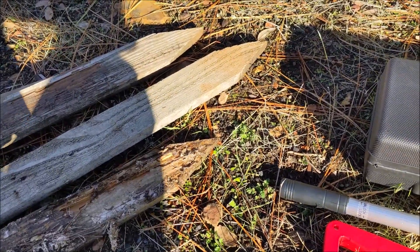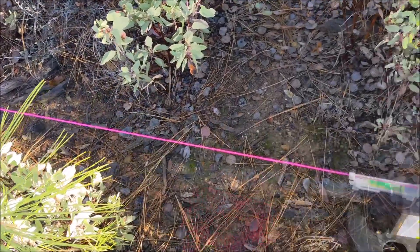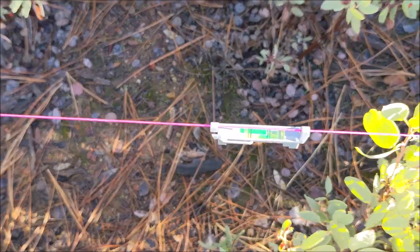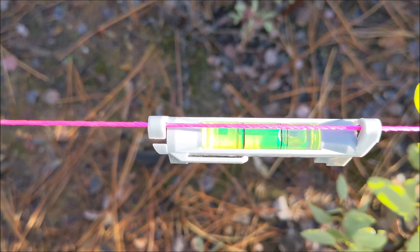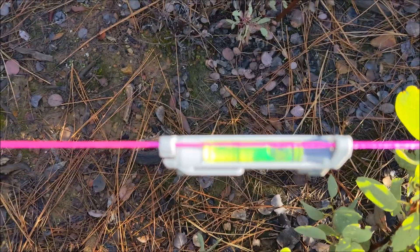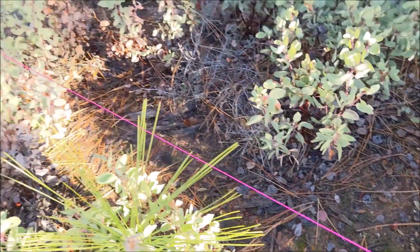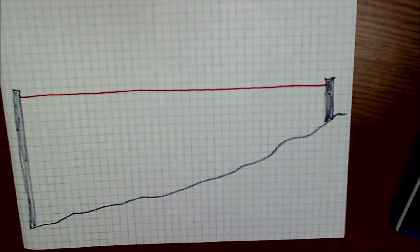Then you're going to drive the stakes in the ground on each end of the slope you're trying to find. Remember, it's going to be average slope. Put the line level on there, make sure it's completely level, and then let's look at it on some paper.